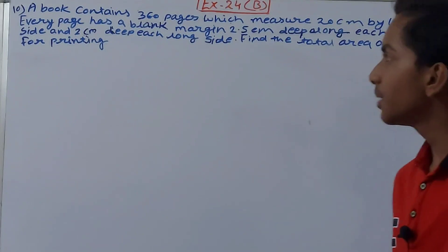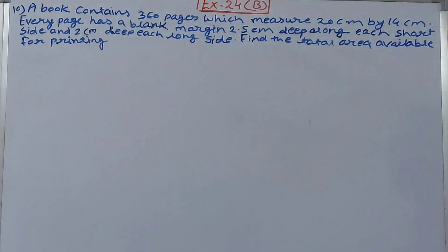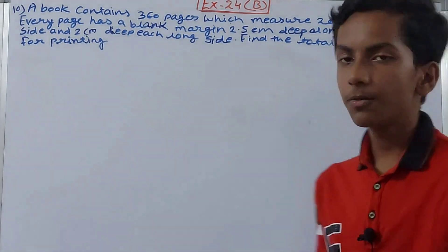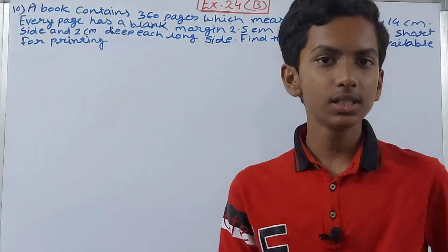20 centimeter by 14 centimeter. Every page has a blank margin 2.5 centimeter deep along each short side and 2 centimeter deep along each long side. Find the total area available for printing. Right, now what does this tell you?